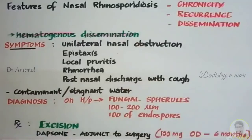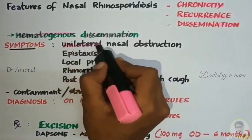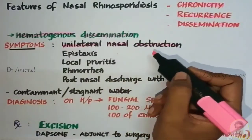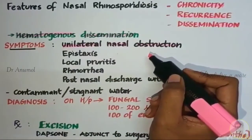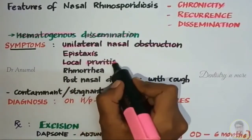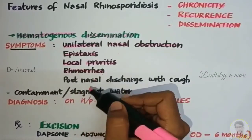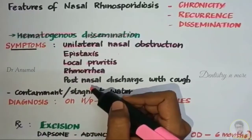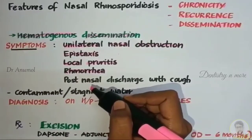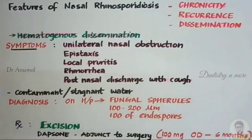The symptoms present in an individual infected with Rhinosporidium seberae are: unilateral nasal obstruction, that is either the right or left nasal passage will be obstructed; epistaxis, that is nasal bleeding; local pruritus, where the patient will feel itching; rhinorrhea, that is a running nose with clear watery or thick mucosal drainage from the nasal passage; and post-nasal discharge with cough.